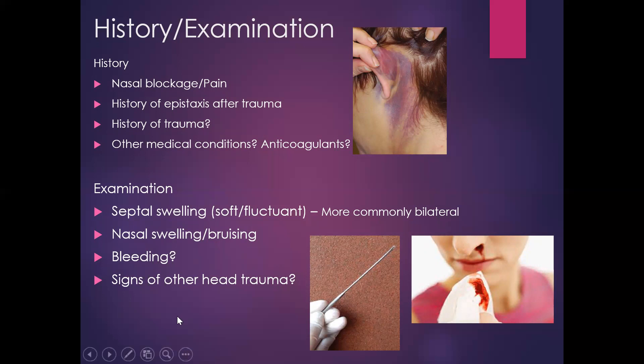When examining the patient, first look for any signs of other head trauma and manage as per your ATLS principles. Are there any signs of a basal skull fracture or injuries elsewhere? Then have a look at the nose — is there any external soft tissue swelling, deformity, or bruising? Then get your nasal thud out and have a closer look inside the nose. You should familiarise yourself with what one looks like and how to use one.